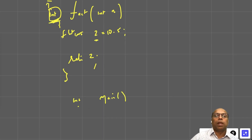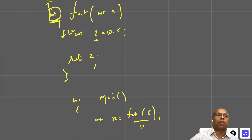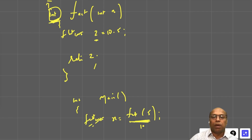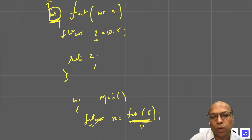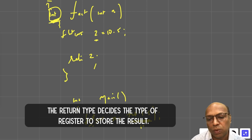In main, if you write: int x = fact(5), the register is of type integer because the return type is integer. Even if z is float, it doesn't matter — only 10 will be stored. So remember: the return type determines what type of register is created.